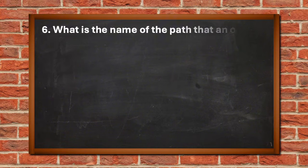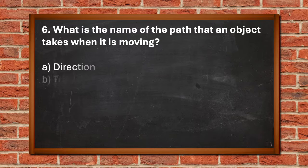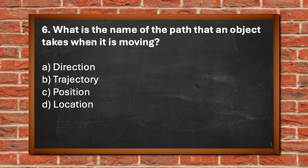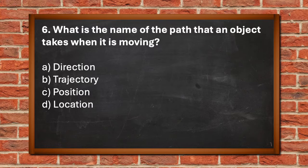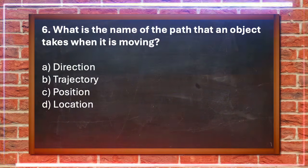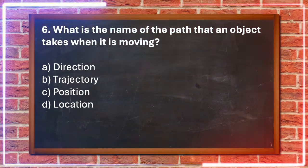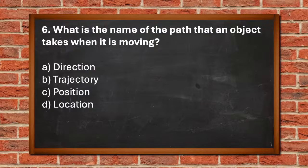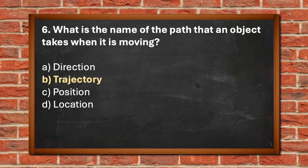Number 6. What is the name of the path that an object takes when it is moving? A. Direction, B. Trajectory, C. Position, D. Location. The answer is B. Trajectory.